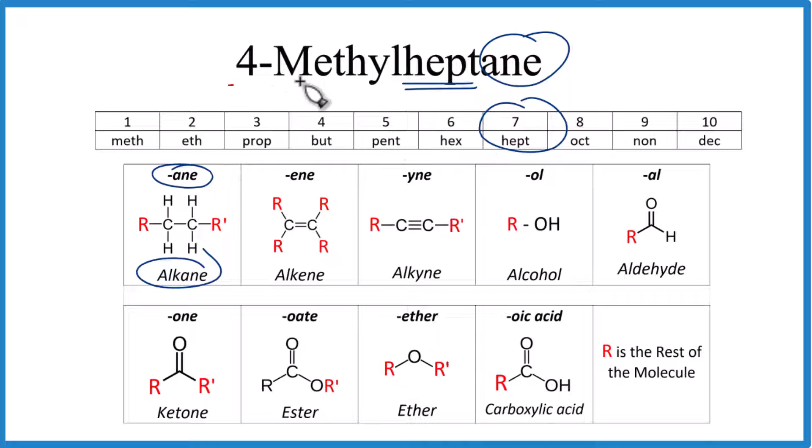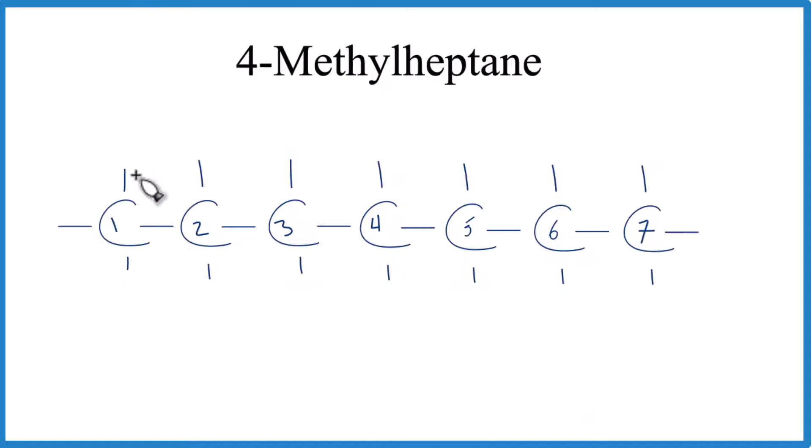The longest chain will have seven carbons. Let's draw that first, then we'll deal with the 4-methyl. This is our heptane here. Seven carbon atoms in a row, all single bonded. These lines here, they go to hydrogen atoms.